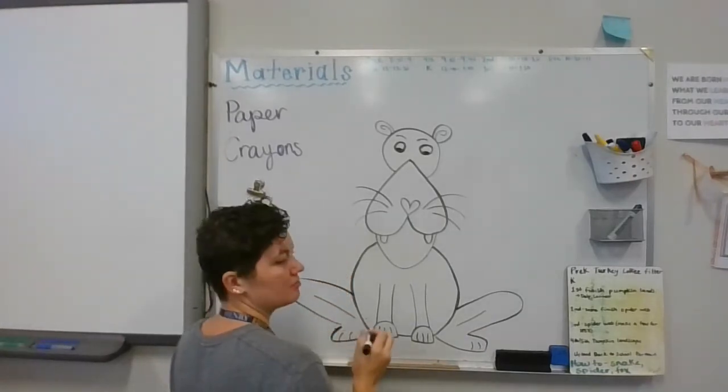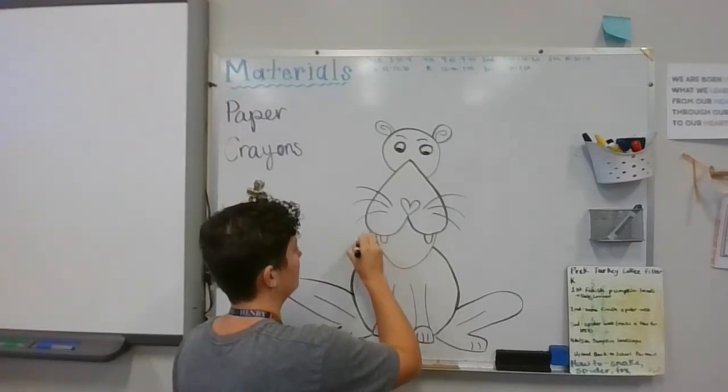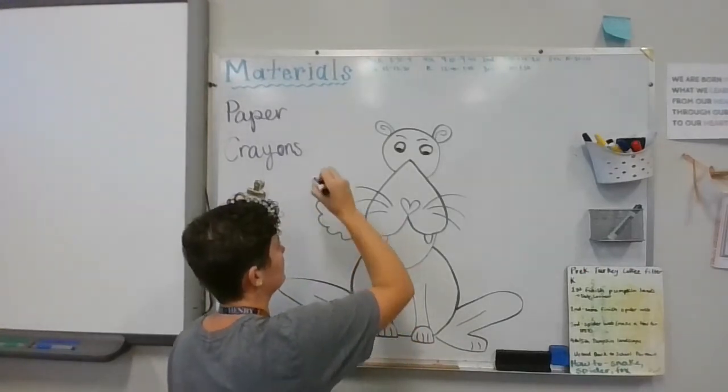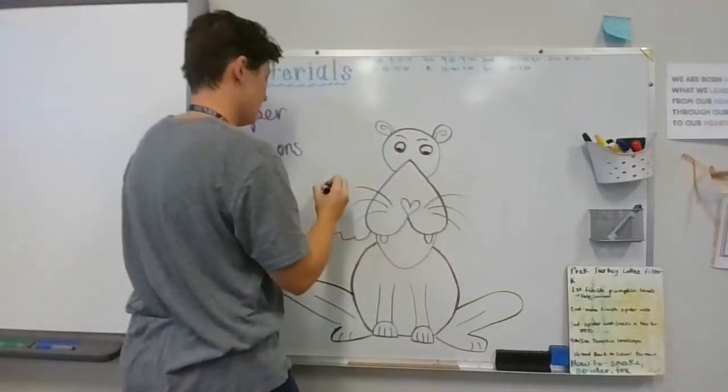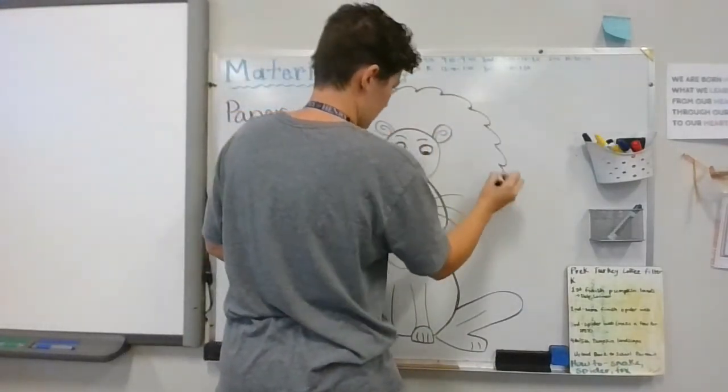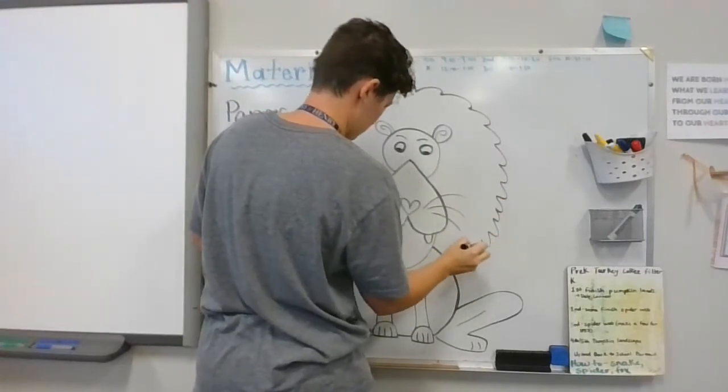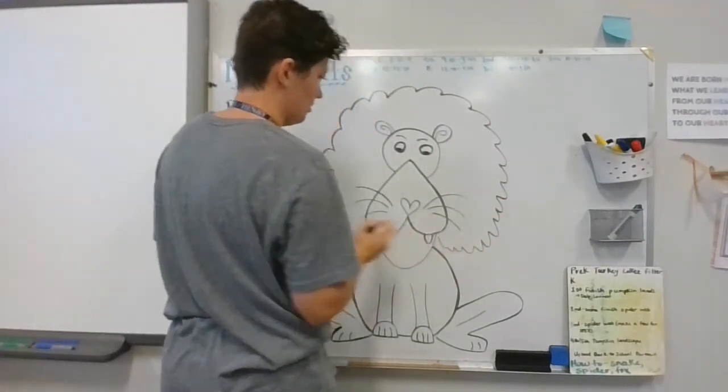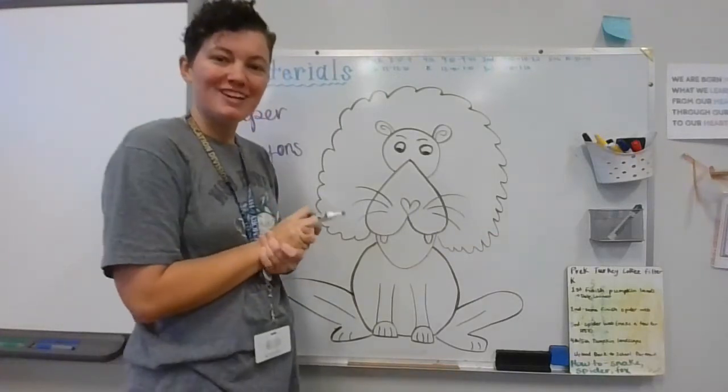And then for his mane, what I'm going to do is come down here and do what looks like clouds around there, all the way up and around. Look at that big mane! So there is our cartoon lion.